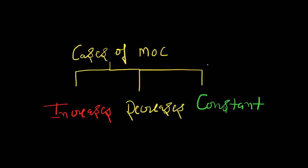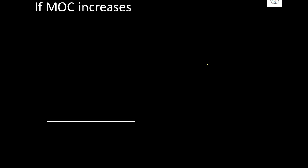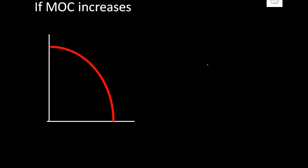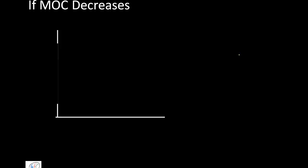Now as I told you, if MOC was not to increase but to decrease or to remain constant, then what would the shape of PPC look like? Let us understand that. So case one is if MOC increases, which we have discussed today, then your PPC curve would be a concave shaped curve. Remember, this is concave. So if MOC is to increase, your PPC would be a concave shaped curve.